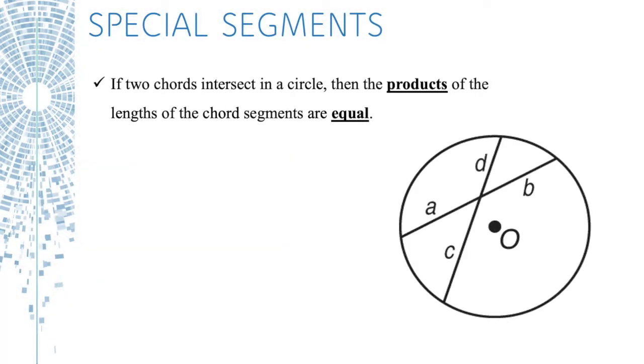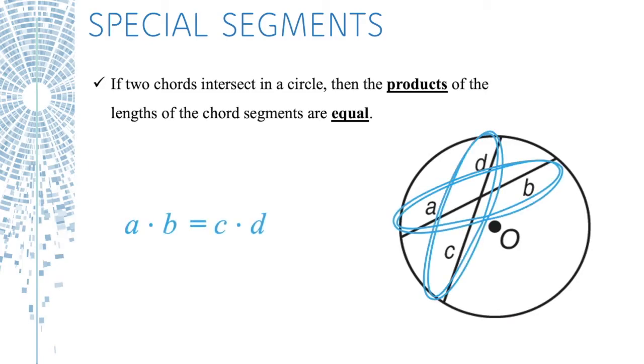If two chords intersect in a circle, then the products of the lengths of the chord segments are equal, meaning A times B equals C times D. I'll show you how that works.